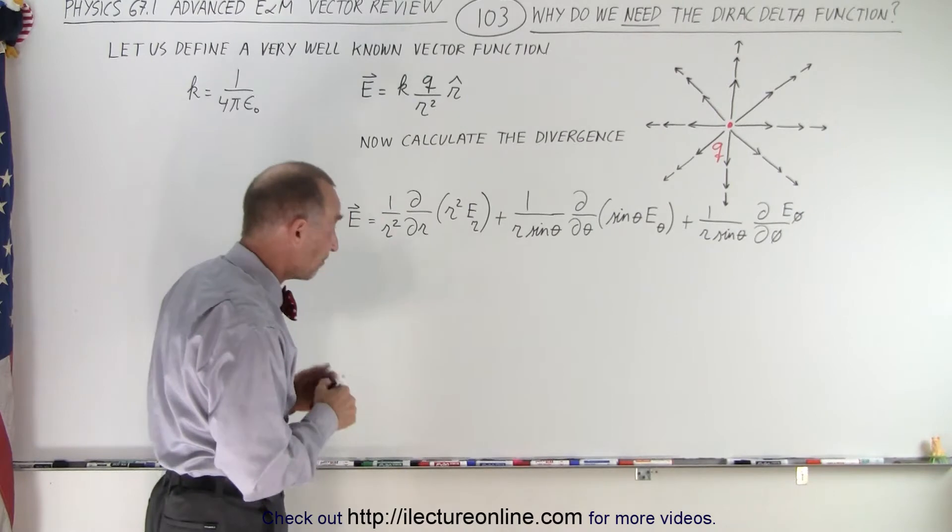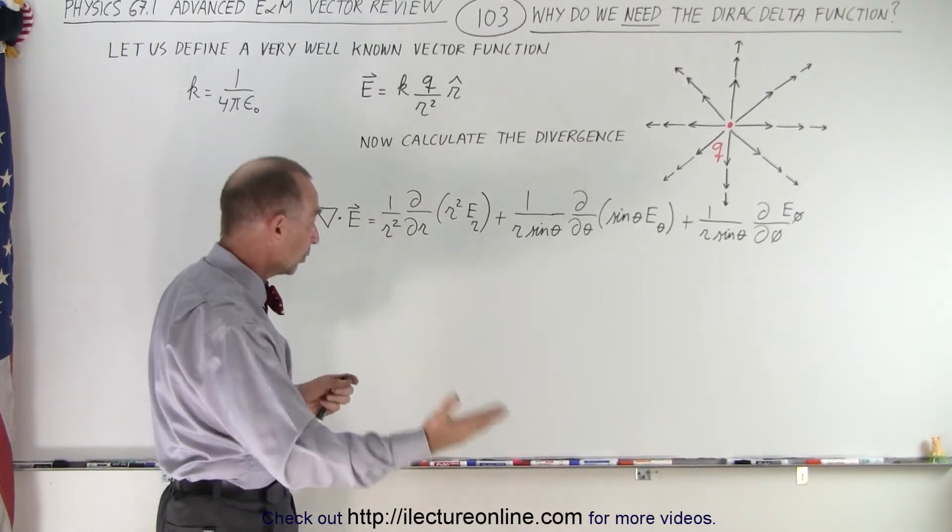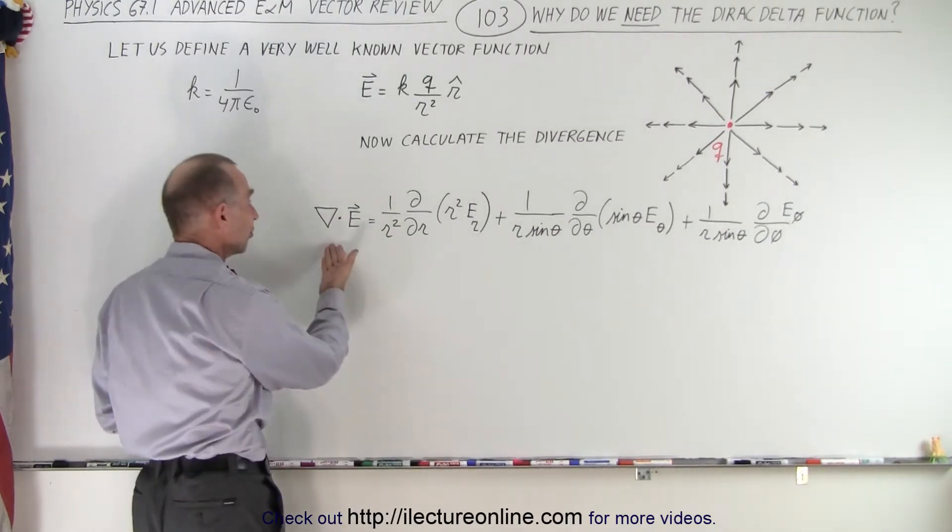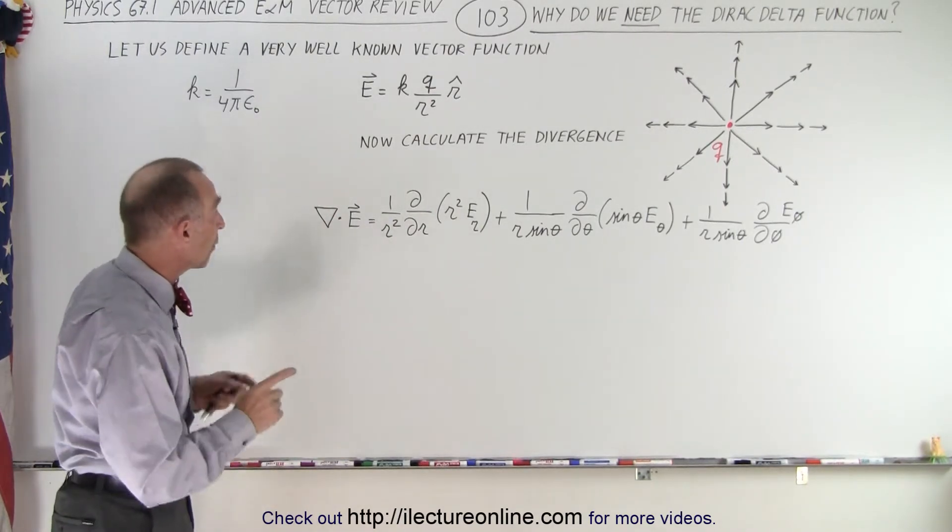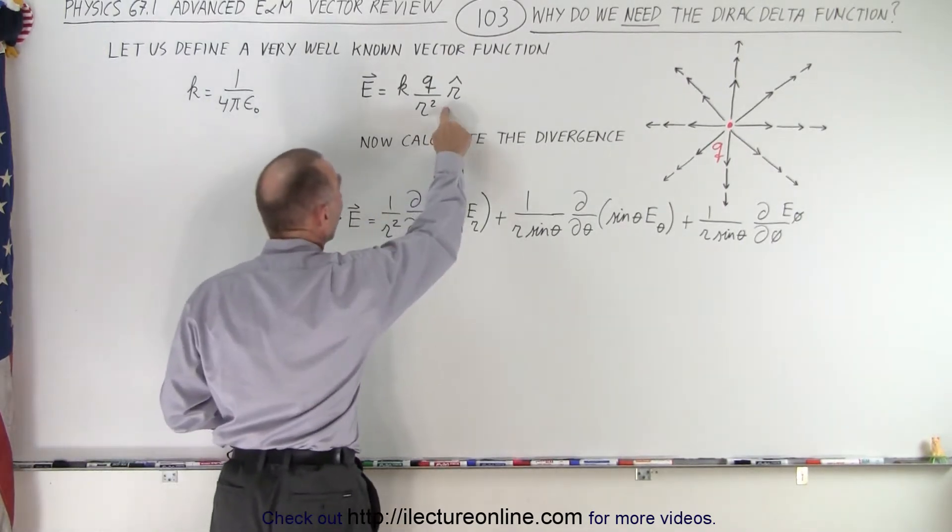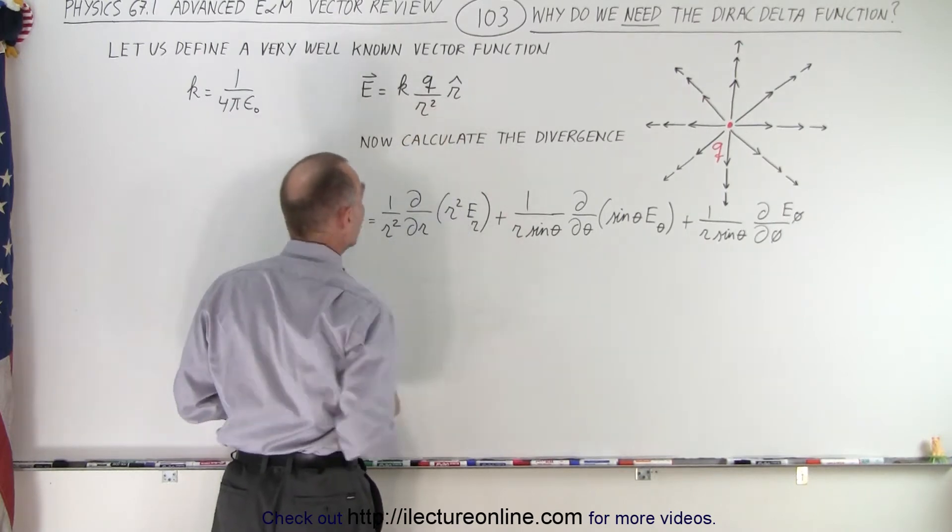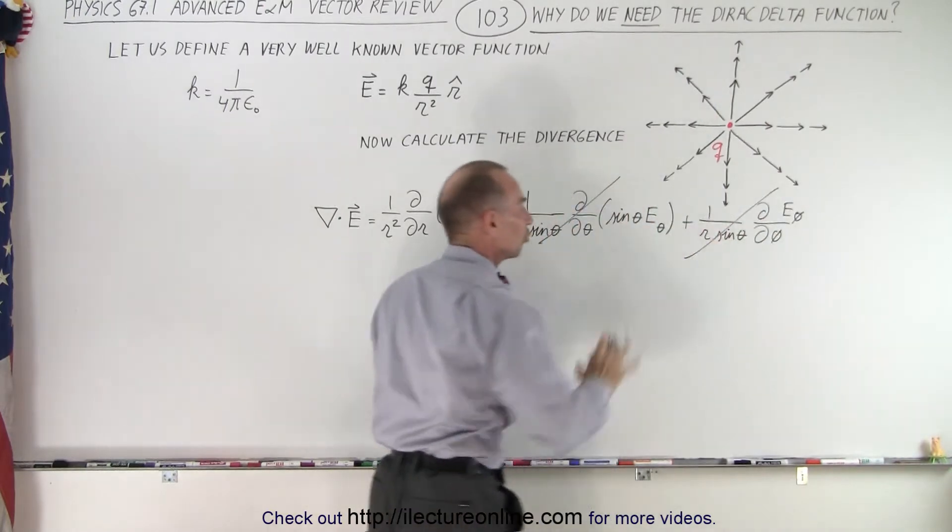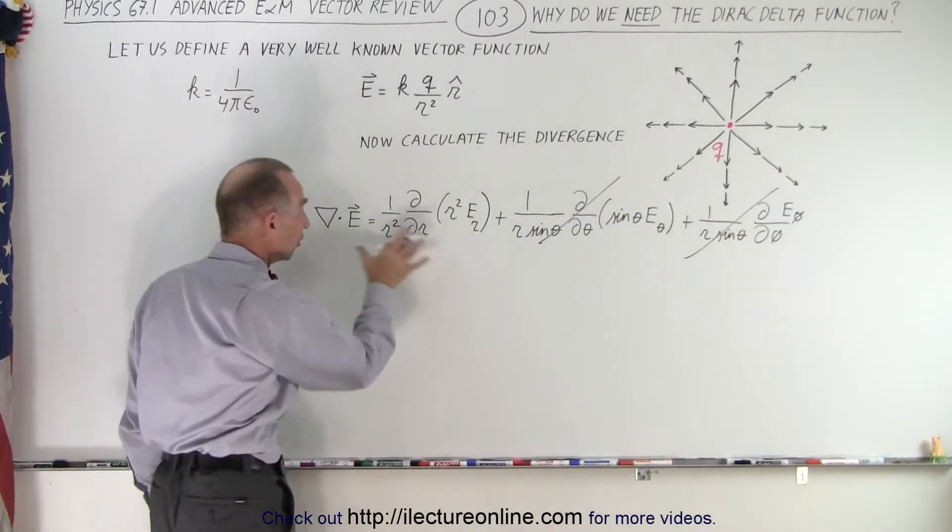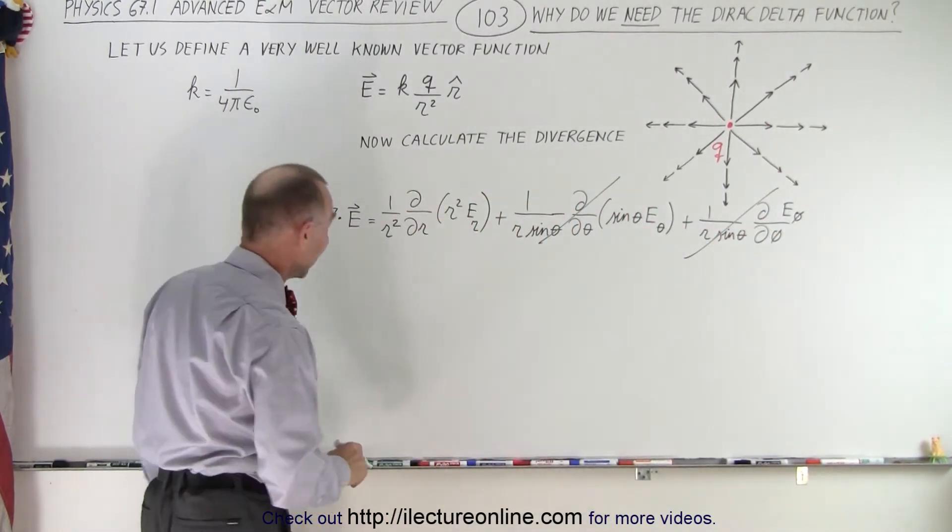But of course, by now you may realize that may not be the case. Since we're dealing in spherical coordinates, here's the equation we need for the divergence of that function. However, since there's only an r component, a radial component, we realize that we don't need these two portions of that equation. We only need to do this right here, which makes it a lot easier.